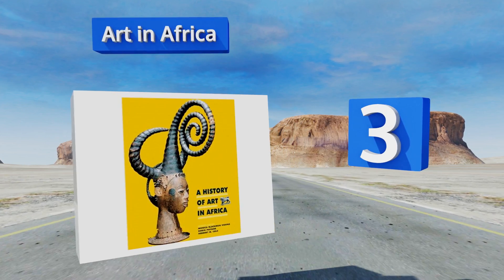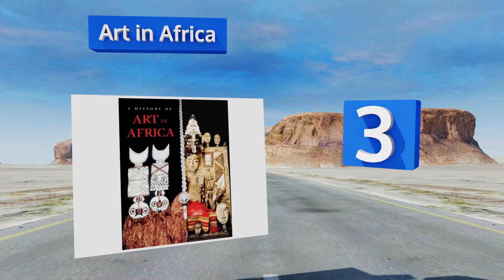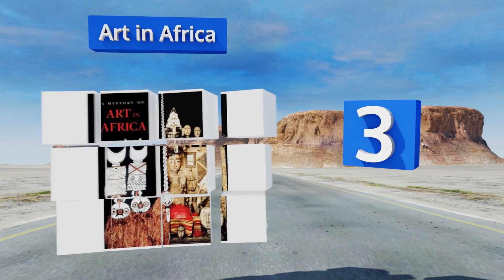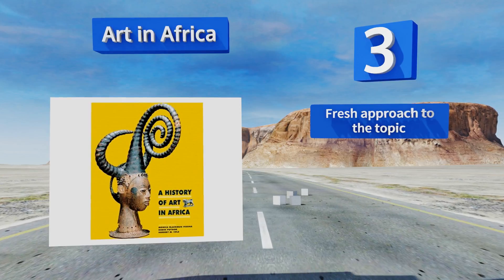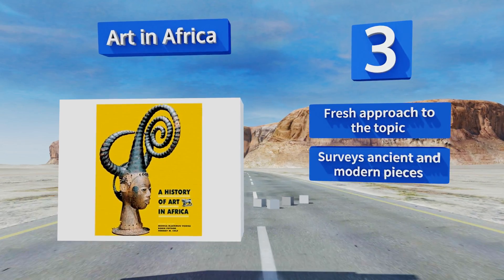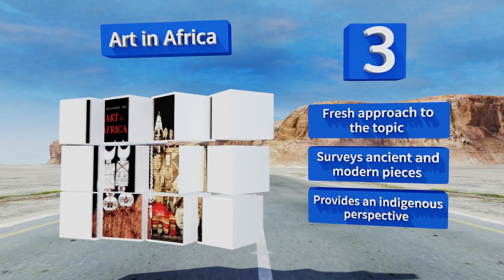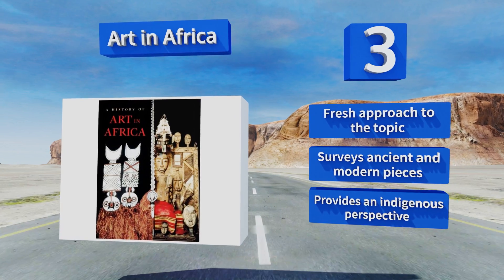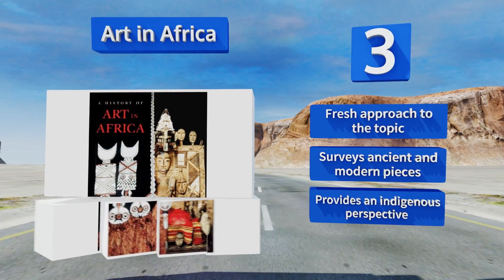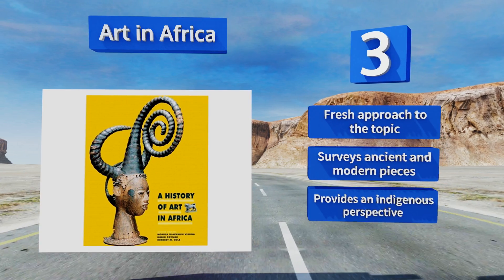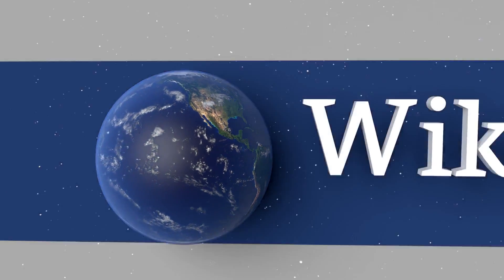Nearing the top of our list at number three, intended for western audiences, Art in Africa critiques and rethinks the colonial frameworks within which objects from the continent have historically been studied and seen. Uniquely, it also discusses contemporary works in the context of a global aesthetic conversation. It takes a fresh approach to the topic, surveys ancient and modern pieces, and provides an indigenous perspective.